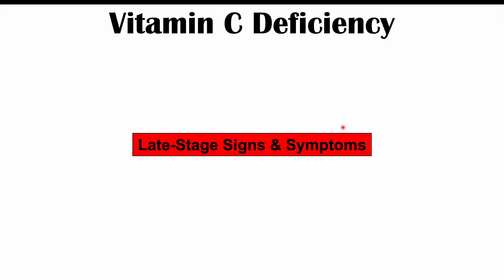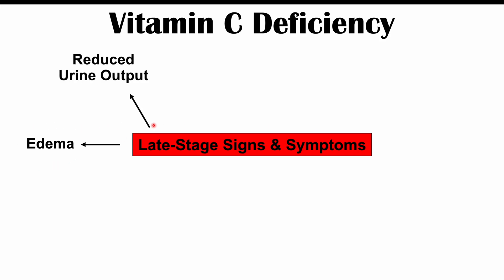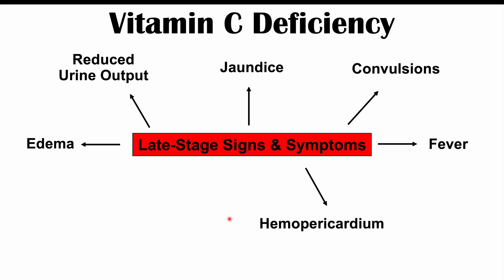There are particular late-stage signs and symptoms in severe and long-lasting vitamin C deficiency or scurvy. These include generalized edema — generalized swelling throughout the body — reduced urine output or oliguria, jaundice (yellowing of the skin and whites of the eyes), convulsions or seizures, and fevers. We can see hemopericardium — bleeding in the pericardial sac around the heart — which can be very significant with high mortality. Cerebral hemorrhage — bleeding in the brain — can also be a significant cause of mortality.